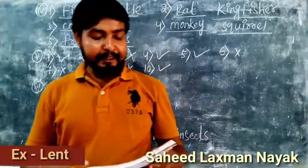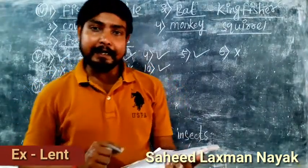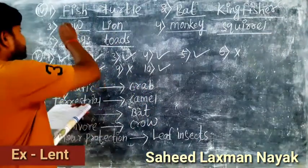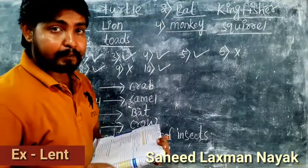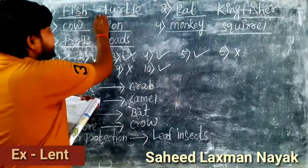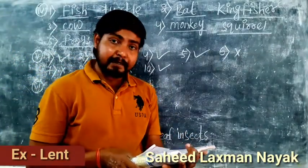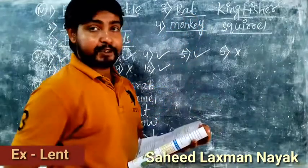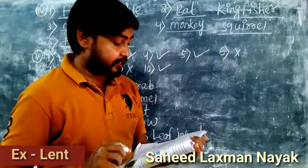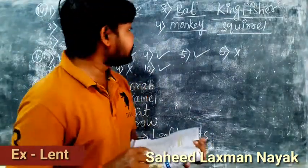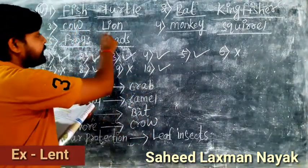Section four: give two examples of animals of each kind. Number one — aquatic animals: fish and turtle. Number two — aerial animals: bat and kingfisher. Number three — terrestrial animals: cow and lion.